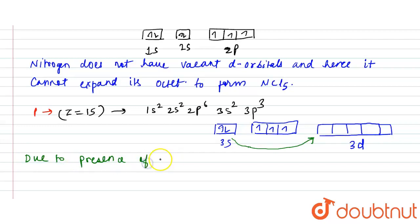So what you will write is: due to presence of vacant d-orbital, that is 3d, phosphorus can expand its octet.